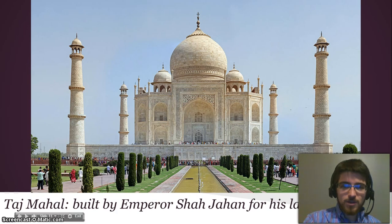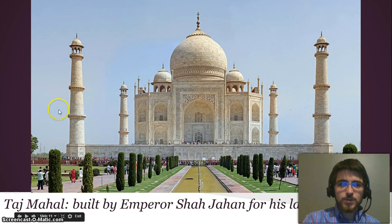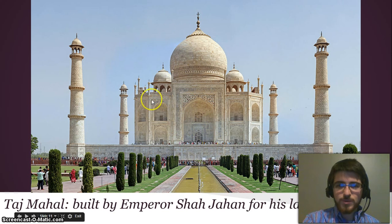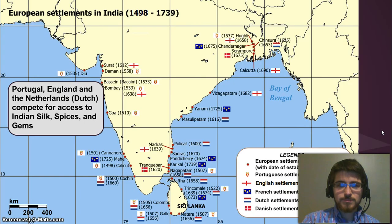Here's a picture of the Taj Mahal, built by Emperor Shah Jahan for his late wife who had just died. So it's a tomb for her, but it's beautiful — look at the water and the trees. It's this incredible and enormous building, and those are people you can see to give you a sense of the scale. It is considered one of the wonders of the world, so it's worth talking about.